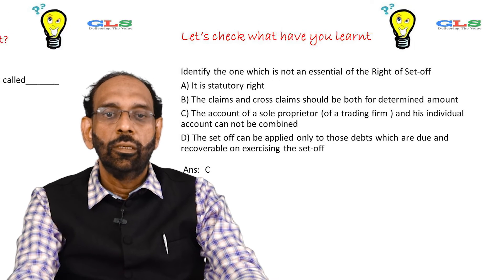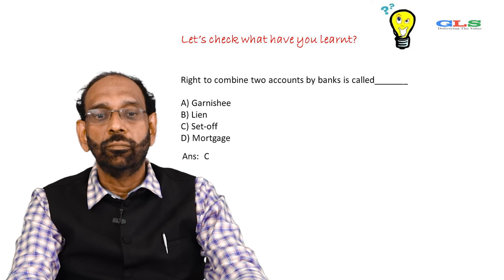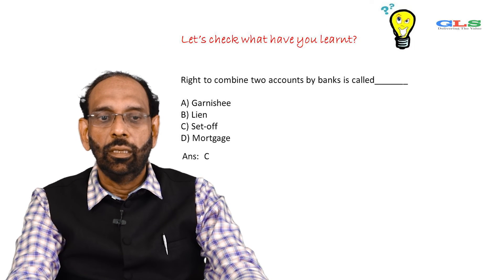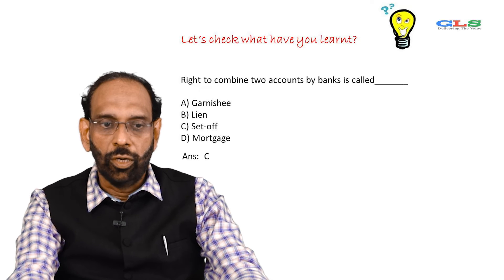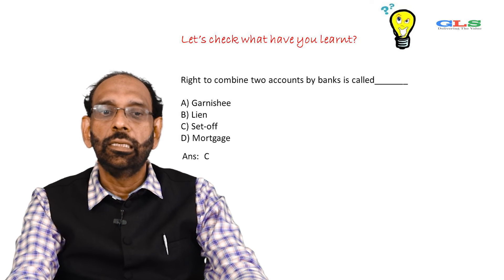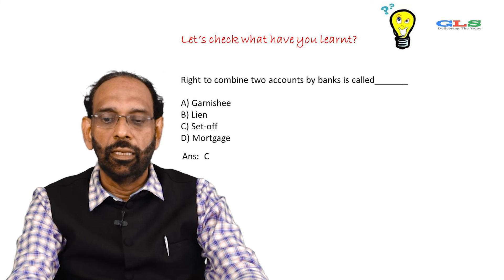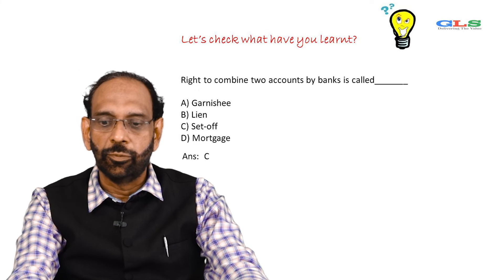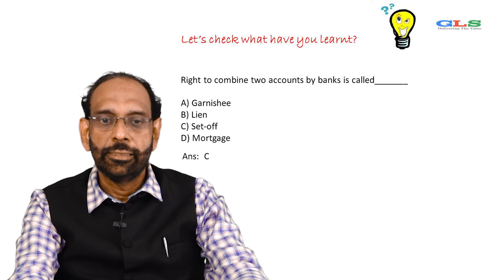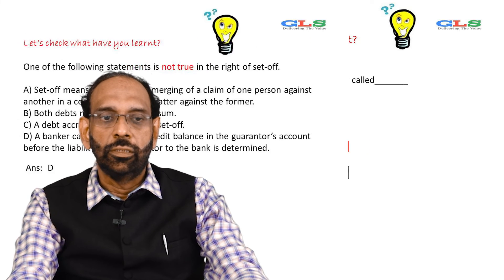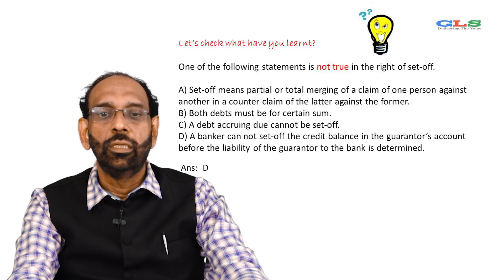Another question: the right to combine two accounts by a bank is called — garnishing, lien, set-off, or mortgage? It is basically set-off. As we said initially, it is a kind of adjustment, so the right to combine two accounts by the bank is called set-off.